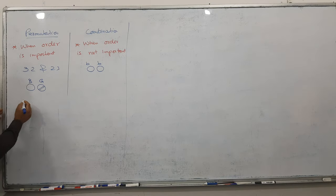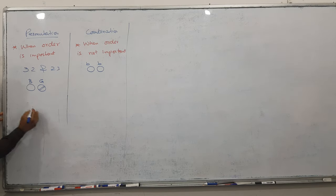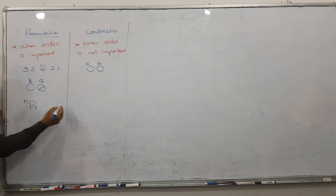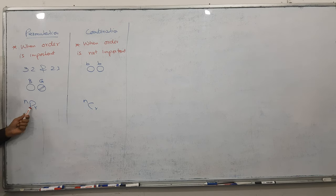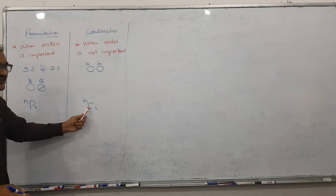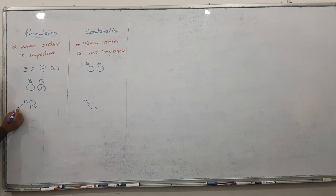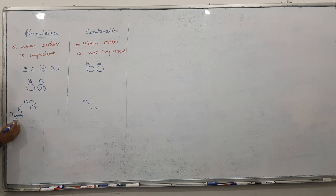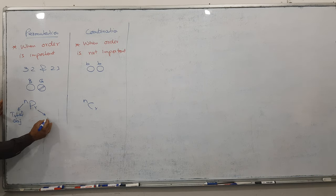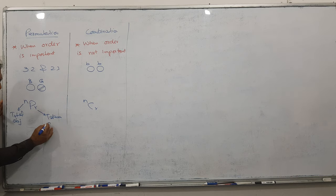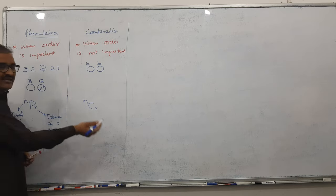The formula here is NPR for permutation and NCR for combination. P stands for permutation and C stands for combination. N stands for total objects, total items. And R stands for how many objects are taken at a time.